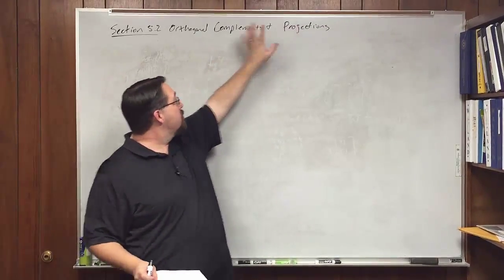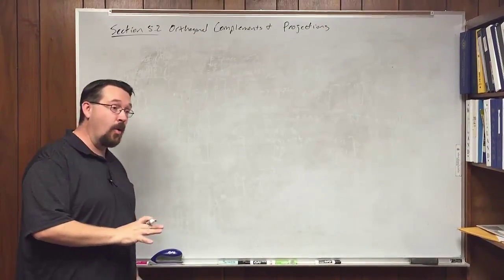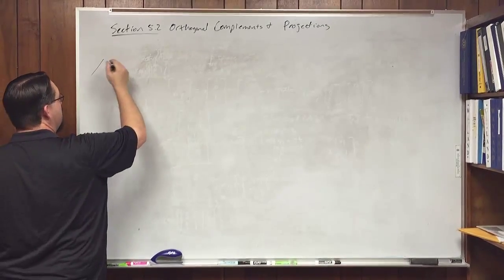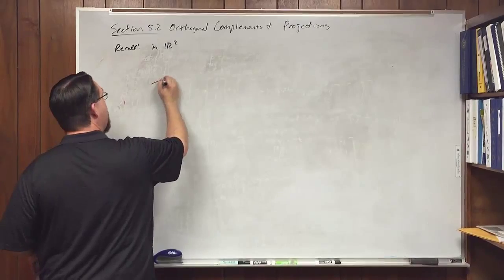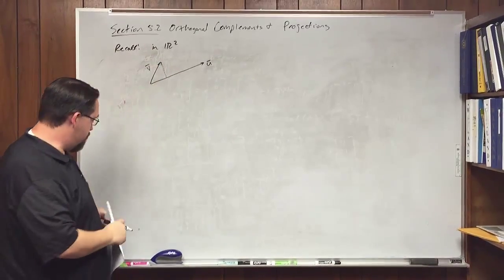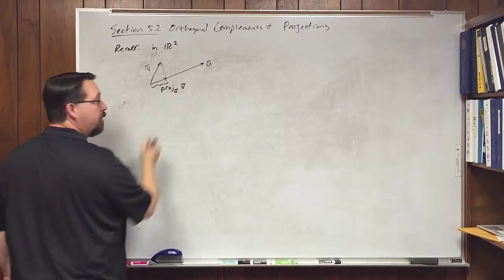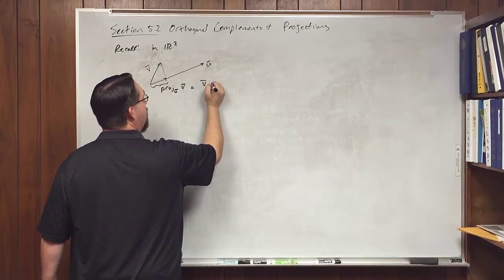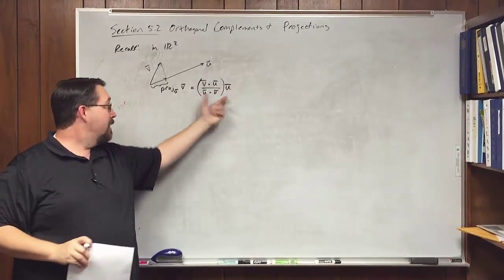Now I want to move on to the second part, which goes back to something from Chapter 1: projecting a vector onto a line or onto another vector. We're now going to project vectors onto general subspaces. In R2, if we had vectors U and V and wanted to find the projection of V onto U, the formula from Chapter 1 is: proj of V onto U equals (V·U)/(U·U) times U.